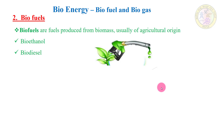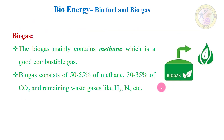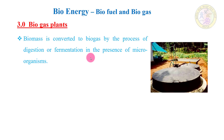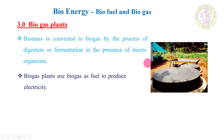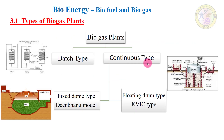Bio ethanol and bio diesel are the mainly two types of bio fuels. Bio gas plants produce mainly methane. This bio gas consists of 50 to 55% methane and 30 to 35% carbon dioxide, with remaining waste gases like H₂, N₂, etc. We can use bio gas plants directly for cooking, or use it to generate power.